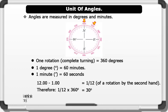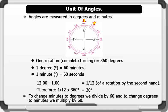Note that to change minutes to degrees, we divide by 60. And to change degrees to minutes, we multiply by 60.